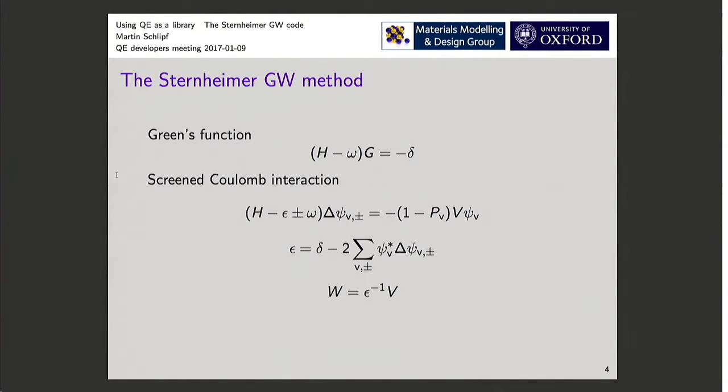For those who don't know the theory behind the Sternheimer GW method, this is a linear response code based on two different linear equations. For both the Green's function and for W, we solve linear problems. For the Green's function, it comes directly from the definition, so the Green's function to linear operator is the solution to the delta function.